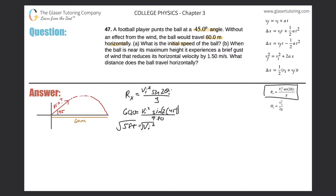Sine of 90 is just 1, so we have 588 equals the initial velocity squared. To solve, take the square root of both sides. The square root of 588 gives 24.2. Since it's a resultant velocity it's always positive — you won't have a negative resultant velocity. So the initial velocity is 24.2 meters per second.